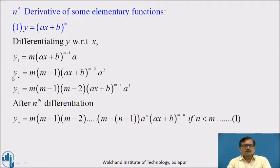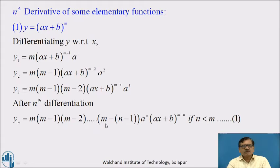Differentiating the second-order derivative with respect to x, we get the third-order derivative y₃ = m(m−1)(m−2)(ax + b)^(m−3) · a³. After generalizing by comparing y₁, y₂, and y₃, after n differentiations we can write yₙ = m(m−1)(m−2)···(m−n+1) · aⁿ · (ax + b)^(m−n), valid when n < m.